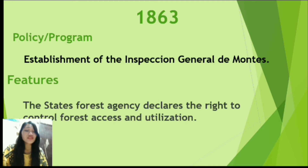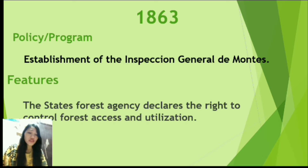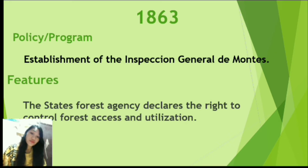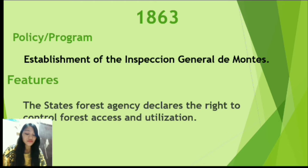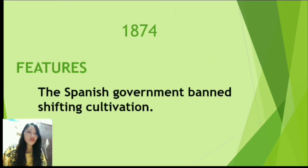In 1863, the Spanish colonizers established the Inspection General de Montes or IGM, a forestry agency tasked to survey the extent of forest resources in the country. The Inspection General de Montes was inaugurated under the Spanish government pursuant to a Spanish royal decree. It featured the state forest agency declaring the right to control forest access and utilization.